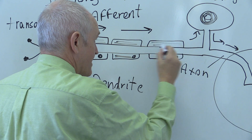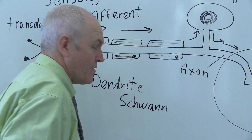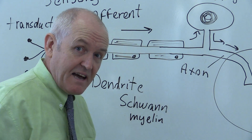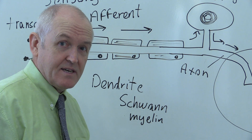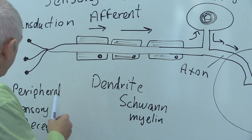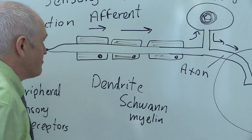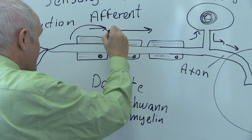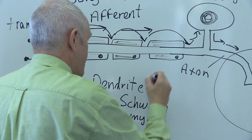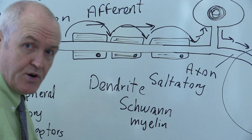Each Schwann cell is about a millimeter in size, so there can be hundreds of individual Schwann cells with their myelin sheaths. Myelin is the fatty material produced by the Schwann cells which insulates, protects, and nourishes the fiber. Again, the depolarization generated by the peripheral sensory receptors doesn't need to travel down the whole length of the dendrite — it can bounce from one node to the next, just as it did with the motor neurons. This is the process of saltatory transmission.